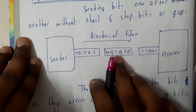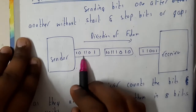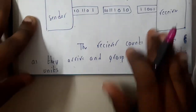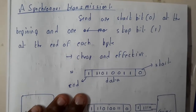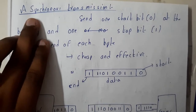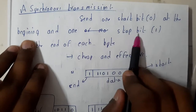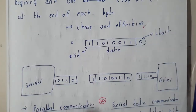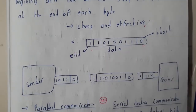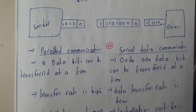The receiver counts the bits as they arrive and groups them into eight units, with gaps so it can understand the boundaries. In asynchronous transmission, we send one start bit as zero at the beginning and one stop bit as one at the end. Instead of gaps and synchronous time zones, we simply add a bit at the start and end, so the receiver can tell whether the complete data has been read or not.